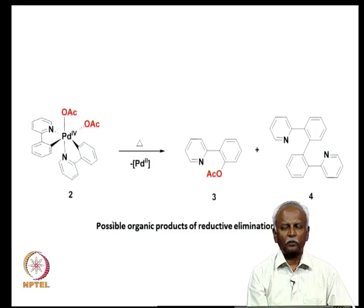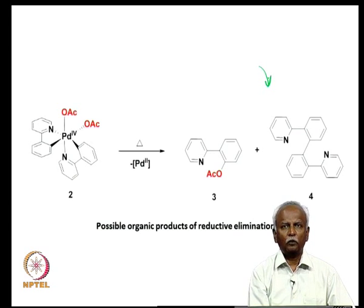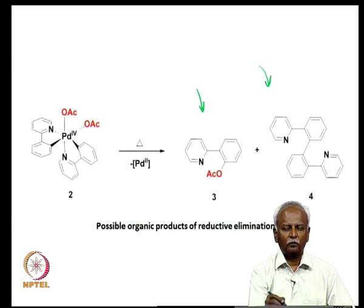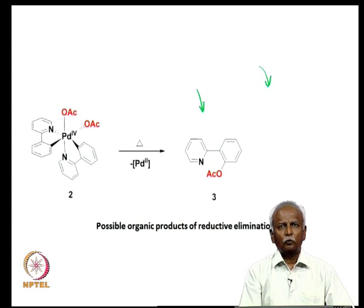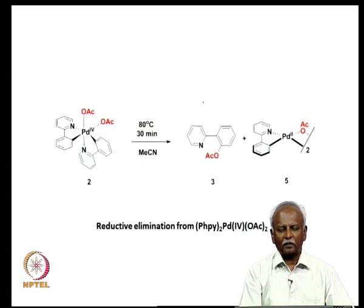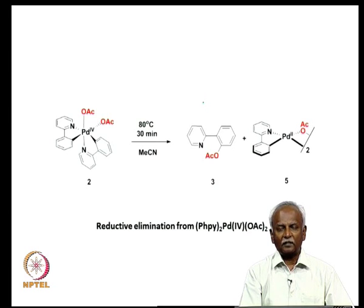If you heat this molecule, you now have the possibility of forming a carbon-carbon coupled product — where you have the two phenylpyridines coupled together — or the acetoxy compound. Although two products are possible, during the catalytic cycle you ended up with only the acetoxy product.